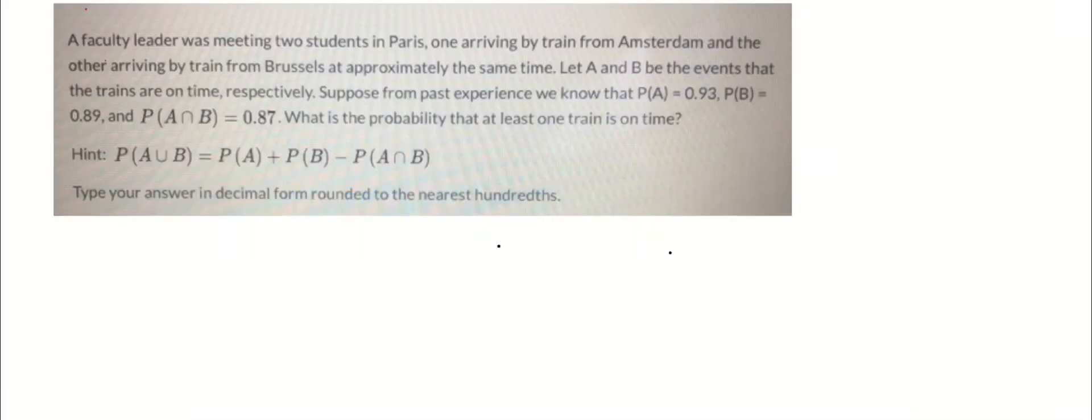Hey guys, in this video we'll be doing a simple probability question. The question says a faculty leader was meeting two students in Paris, one arriving by train from Amsterdam and the other arriving by train from Brussels at approximately the same time. Let A and B be the events that the trains are on time, respectively.